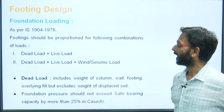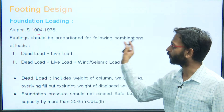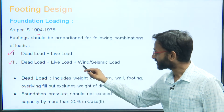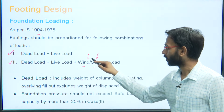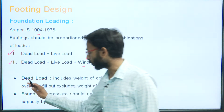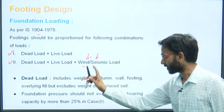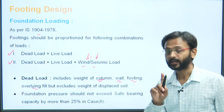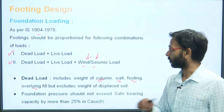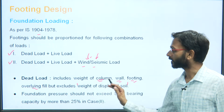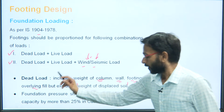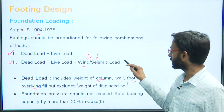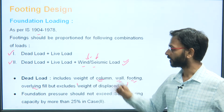As per IS 1904, footing should be proportioned for the following load combinations: first is dead load plus live load; second is dead load plus live load plus wind or seismic load. Whichever combination gives the greater load, that will be taken. Dead load includes the weight of the column, wall, footing, and overlying fill, but it excludes the weight of the displaced soil.